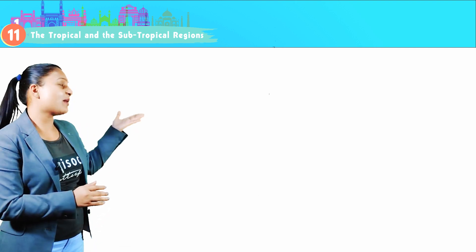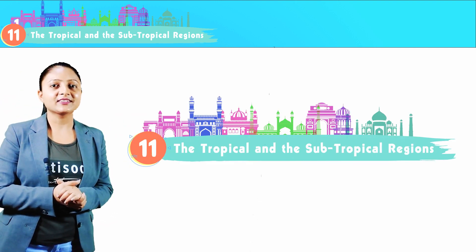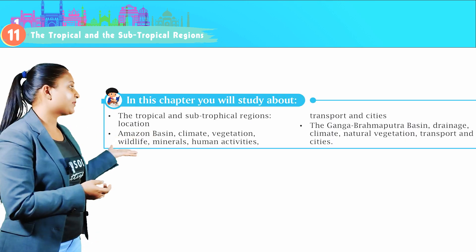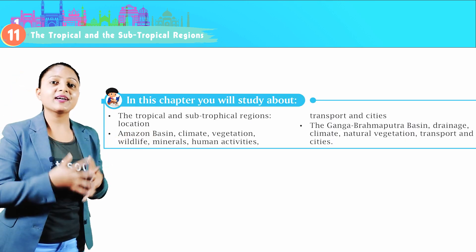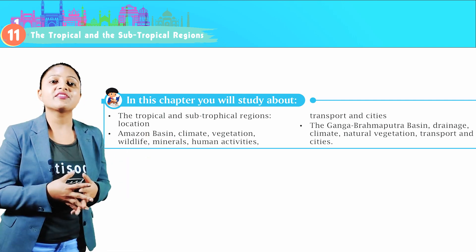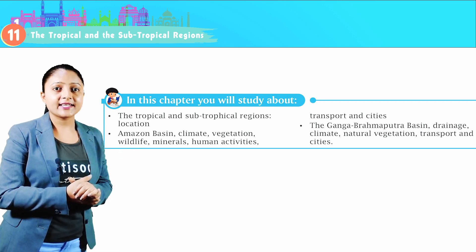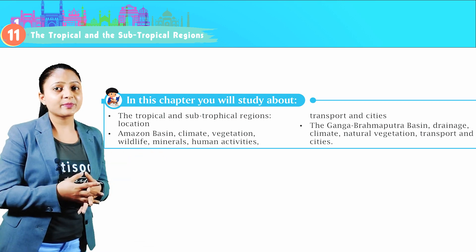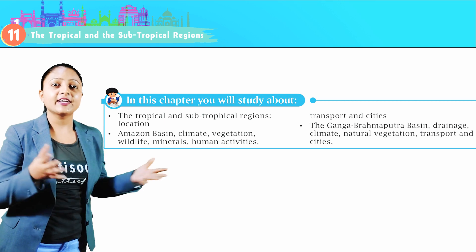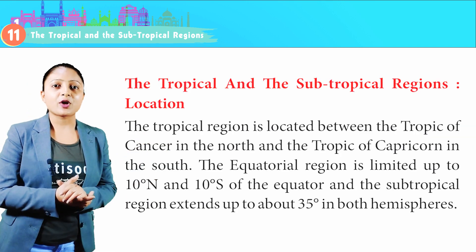Hello class, a very warm welcome to this geography session. Today we are going to start chapter 11: the tropical and subtropical regions. In this chapter, you will study about the tropical and subtropical regions — location, Amazon basin, climate, vegetation, wildlife, minerals, human activities, transport and cities, the Ganga-Brahmaputra basin, drainage, climate, natural vegetation, transport and cities.